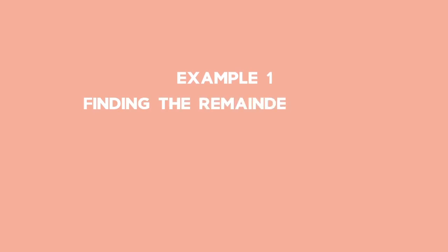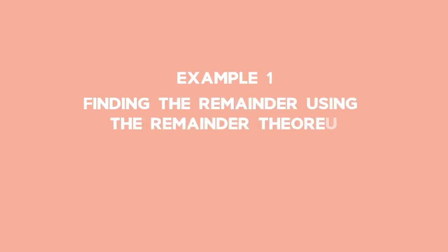Example 1: Finding the remainder using the remainder theorem. Find the remainder when f of x equals x cubed plus 3 times x squared plus 2 times x minus 1 is divided by x minus 1.